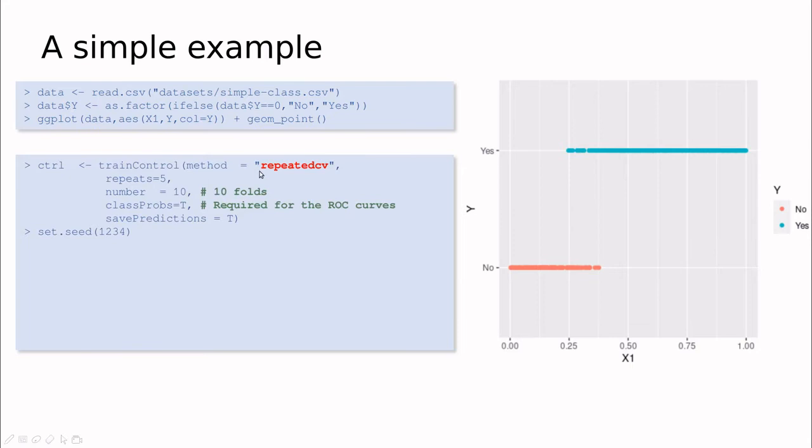I'm going to use cross-validation. Instead of the traditional tenfold cross-validation, I'm going to use tenfold five times. This is called repeated cross-validation and is used to obtain some estimation of the error in the ROC curves.